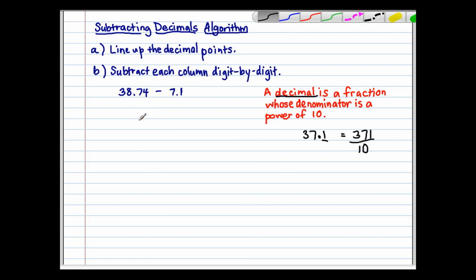Alright. So, let us first perform the subtraction by lining up the decimal points. 38.74 minus, I'm going to put 7.1 beginning under the digit 8, so that the decimal points can line up. And then, every other number is going to get a 0 underneath it. Now, I'm going to perform the subtraction. 4 minus 0 is 4. 7 minus 1 is 6. 8 minus 7 is 1. And 3 minus 0 is 3. Leaving me with an answer of 31 and 64 hundredths.